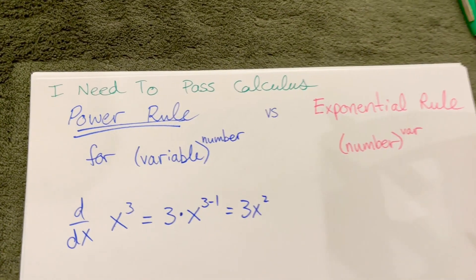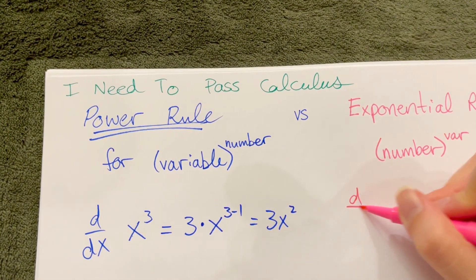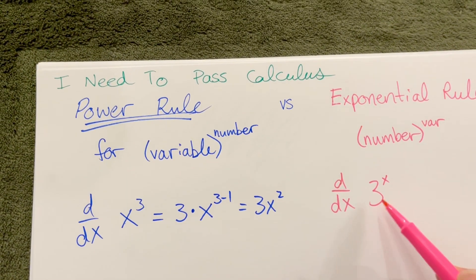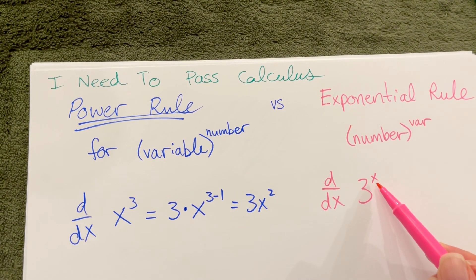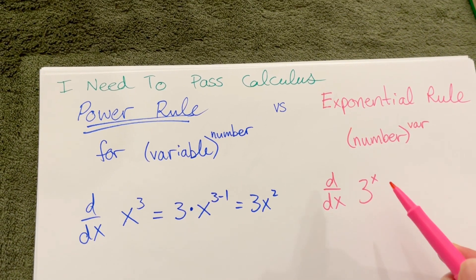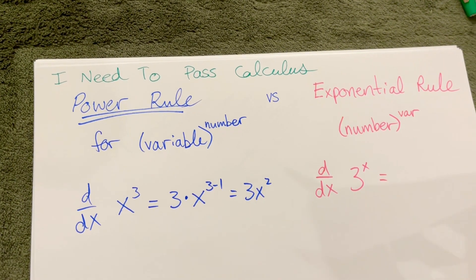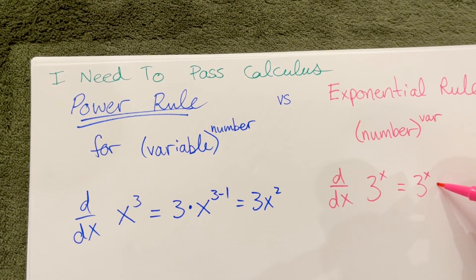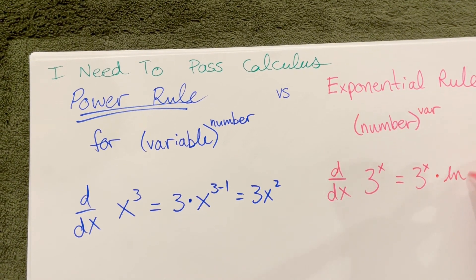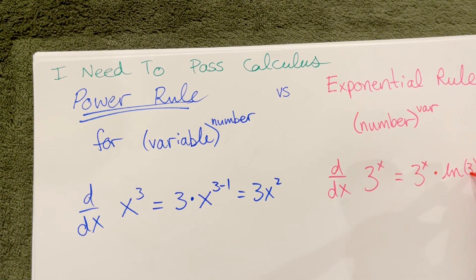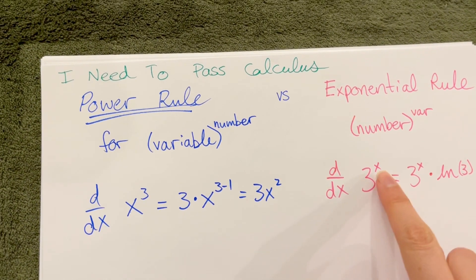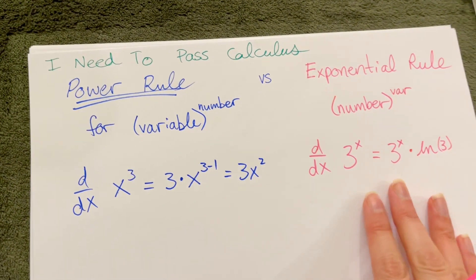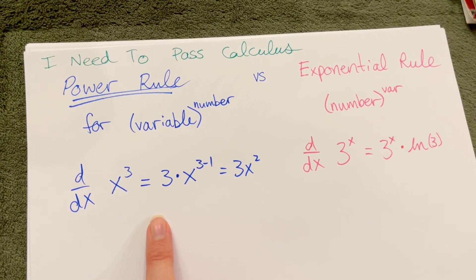For the exponential rule, an example would be taking the derivative of 3 to the x. Notice here it's a number as your base and a variable as your exponent. There's a totally different rule — you can look it up or memorize it — where you write the exact same function again times a correction factor: ln of whatever your base was. So if this is 7 to the x, it'll be 7 to the x times ln 7. There's a whole different rule for exponential derivatives compared to power rule derivatives.